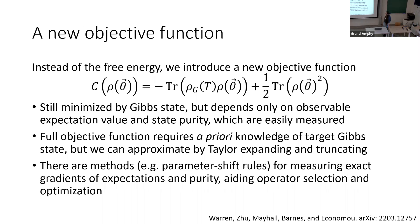One obvious flaw: measuring this objective function as written requires full knowledge of the very Gibbs state we're trying to prepare. But we found numerically that we can approximate this objective function using a truncated Taylor expansion of the Gibbs state, which still works fairly well for preparing Gibbs states. This objective function also allows use of parameter shift rules for measuring exact gradients of the expectation value and purity, giving a principled way of adding operators to our ansatz, similar to tricks used in regular ADAPT-VQE.